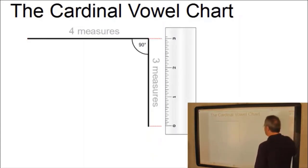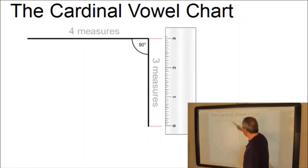Then we need a second line, which is the right hand vertical line, which is three measures in relationship to the four measures of the top line, and the angle between the two lines is 90 degrees.